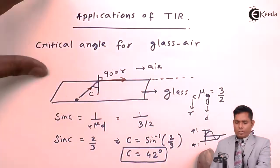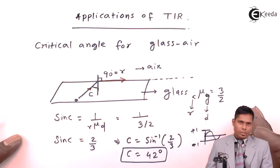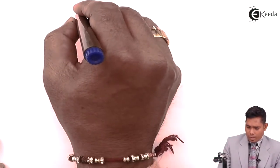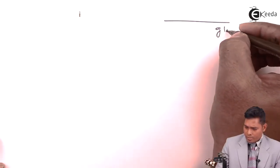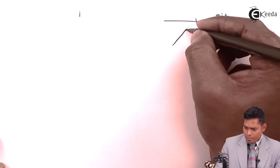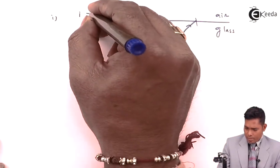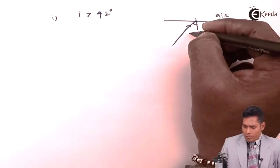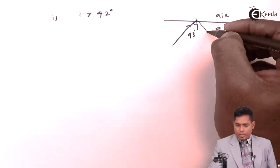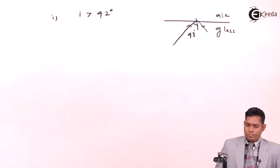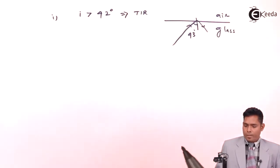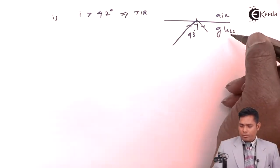The critical angle of the glass-air interface is 42 degrees. The light must travel from glass to air, not from air to glass. If the angle of incidence is greater than 42 degrees, then the ray will be reflected back — that implies total internal reflection (TIR).